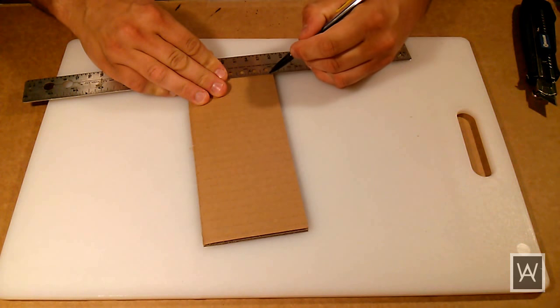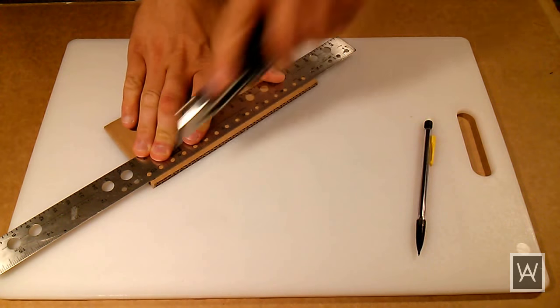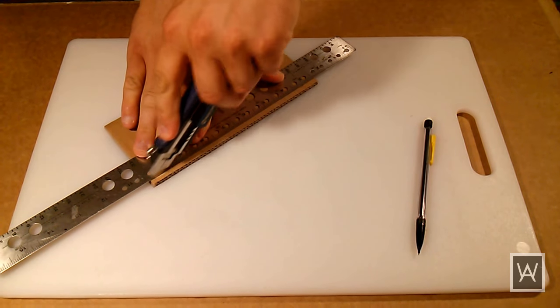Now cut some walls. Going against the corrugation, as shown here, cut strips that are 3/16ths of an inch thick.